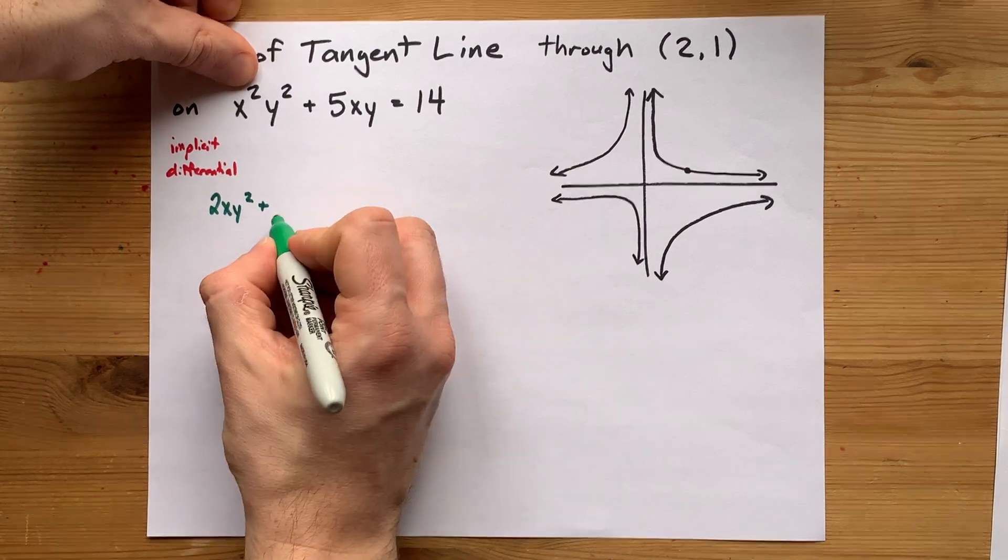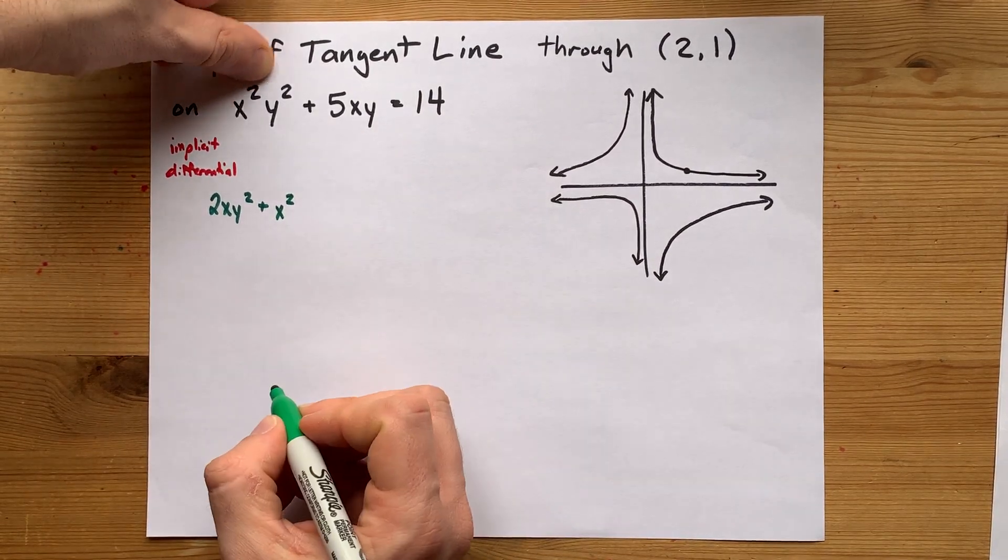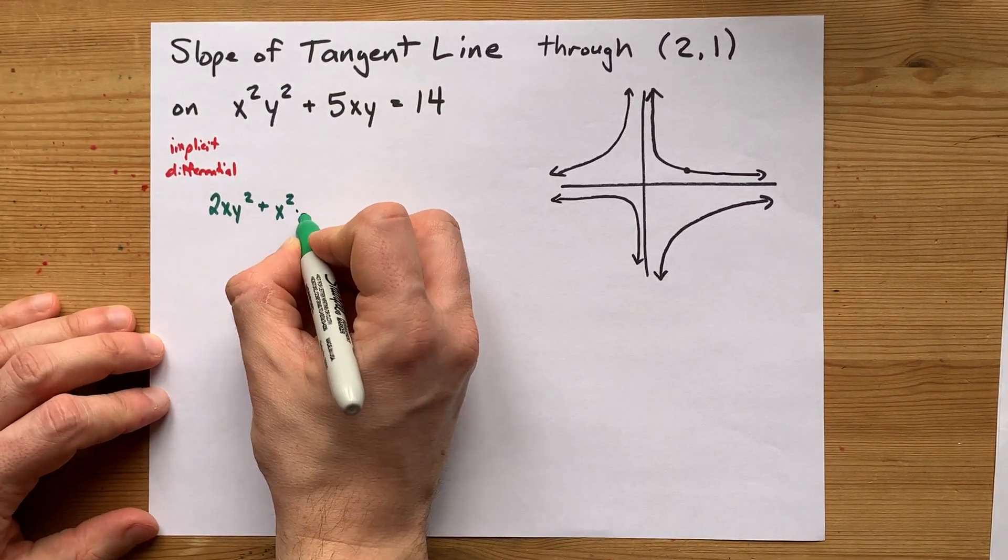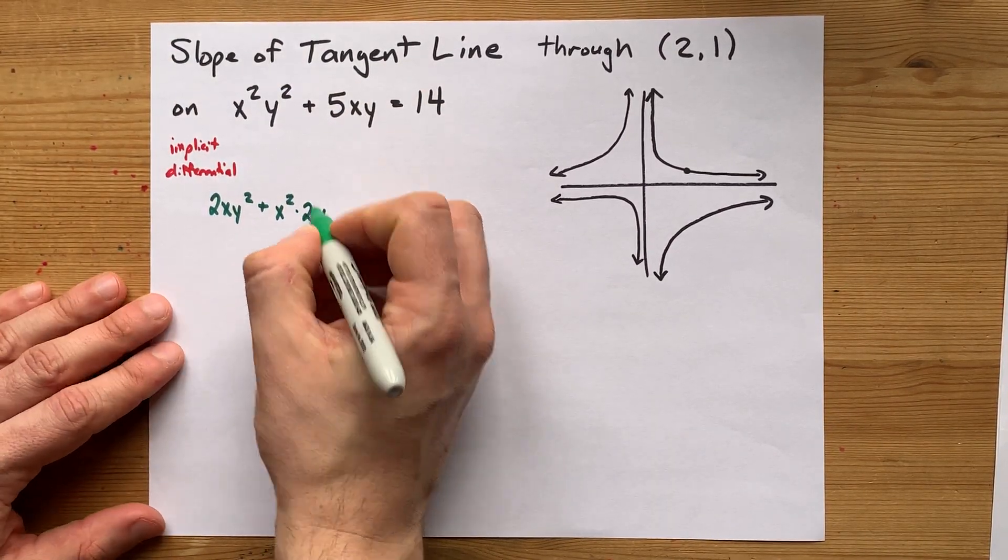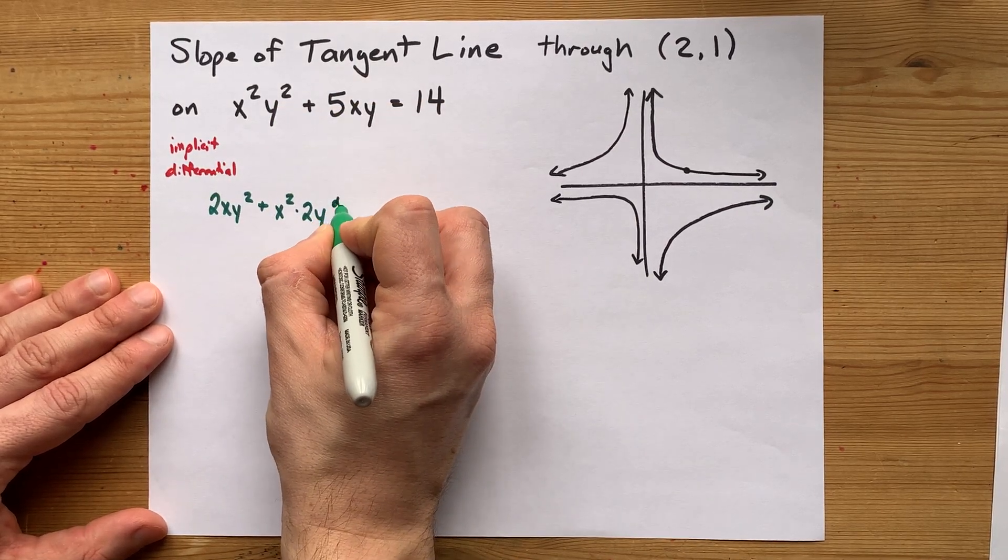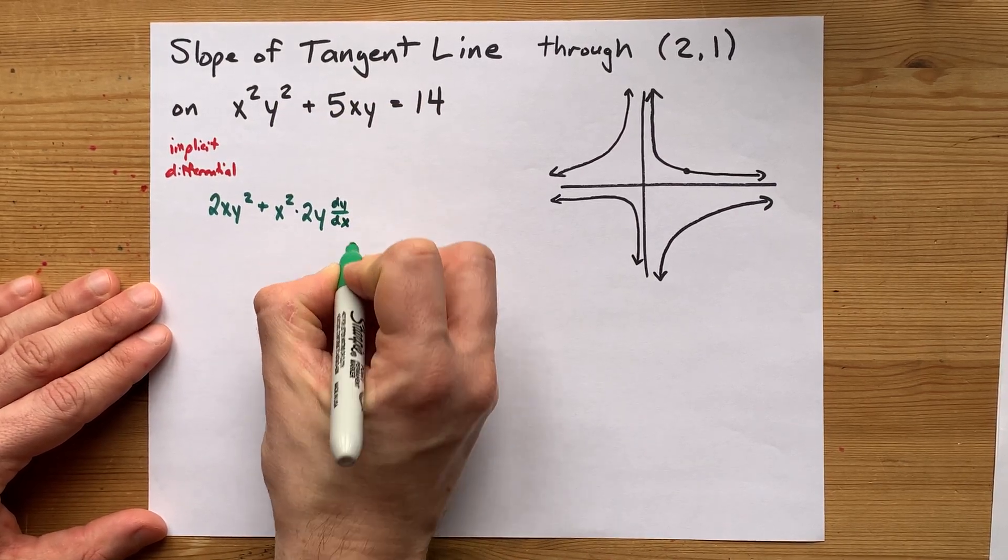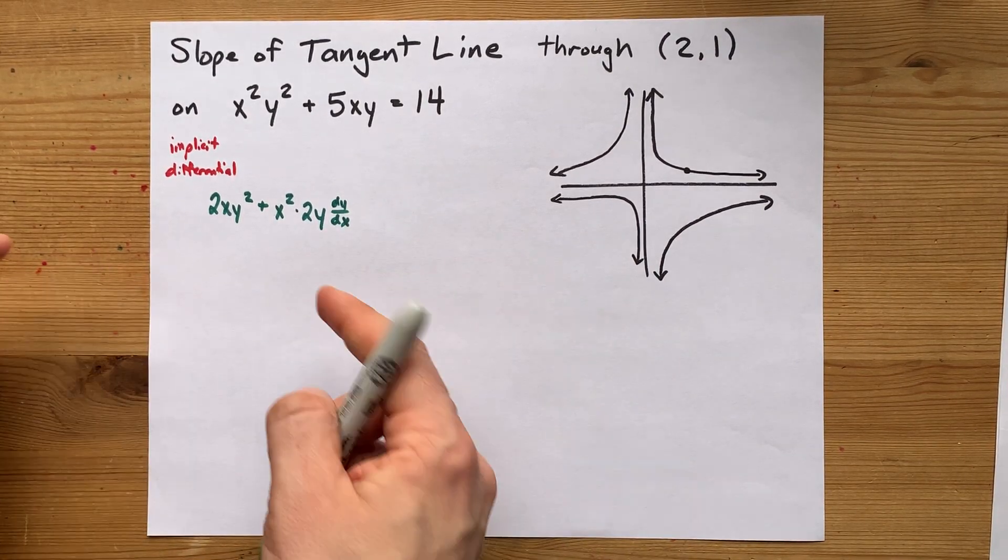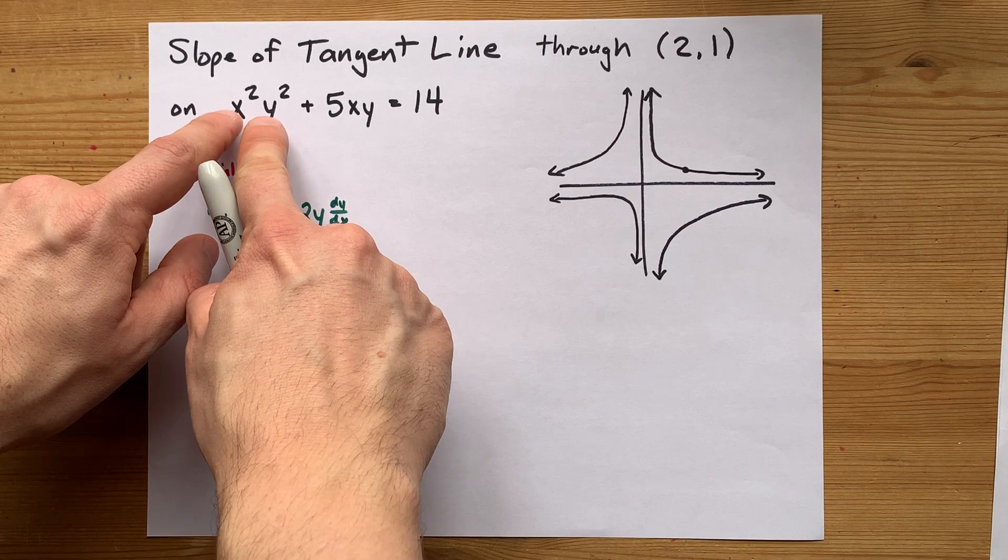and then you take the first thing as is times the derivative of the second thing. The derivative of y squared is 2y times the derivative of what's on the inside here, which I'm going to call dy by dx, just so you can visually see that that's what we're going to solve for in the end. This is the derivative of just that chunk.